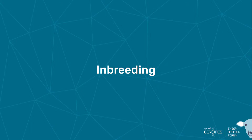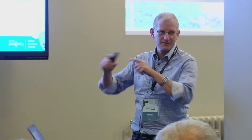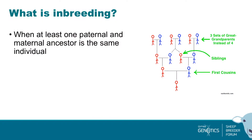So, inbreeding — what's inbreeding? It's when an individual has at least one paternal and maternal ancestor that's in common. Here's an example where the parents are first cousins, so they've got common ancestry — the cousins have grandparents that are in common. If you draw one of these diagrams, you can trace from the individual through the maternal line to a common ancestor and then back down through the paternal line, and you get a loop in the pedigree.